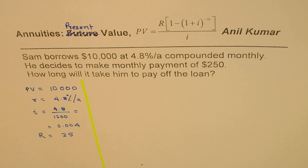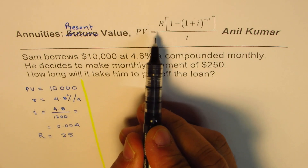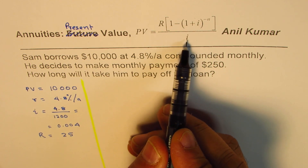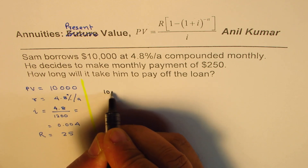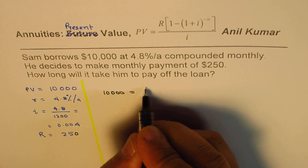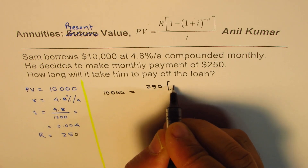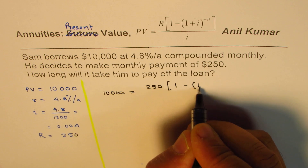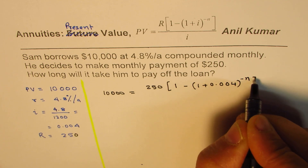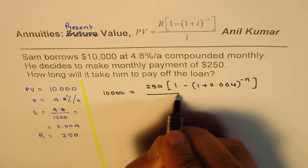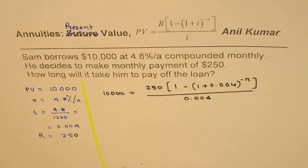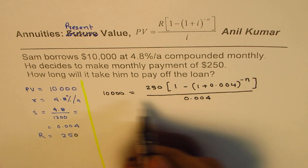Knowing this, we can apply the formula and rearrange to find the value of n. The formula is: present value equals R times [1 minus (1 plus i) to the power of minus n] divided by i. So we write: ten thousand equals 250 times [1 minus (1 plus 0.004) to the power of minus n] divided by 0.004.